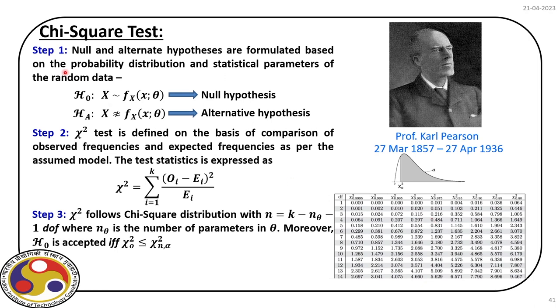The three steps in chi-square testing are: Step 1 — propose the null hypothesis. The null hypothesis is that x follows a population with distribution f(x; θ) with some parameter θ; the alternative hypothesis is that x does not follow that distribution. We can propose this by looking at the frequency polygon or histogram and then verify whether the proposal is correct.